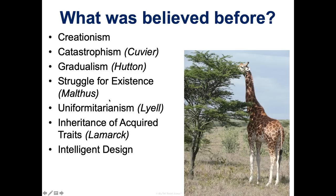A lot of these people are paleontologists and geologists — they studied the fossil record and how land has changed over time, which helped develop these theories. Malthus is my favorite because he is the closest. His concept of a struggle for existence is really foundational for what Darwin later came up with.